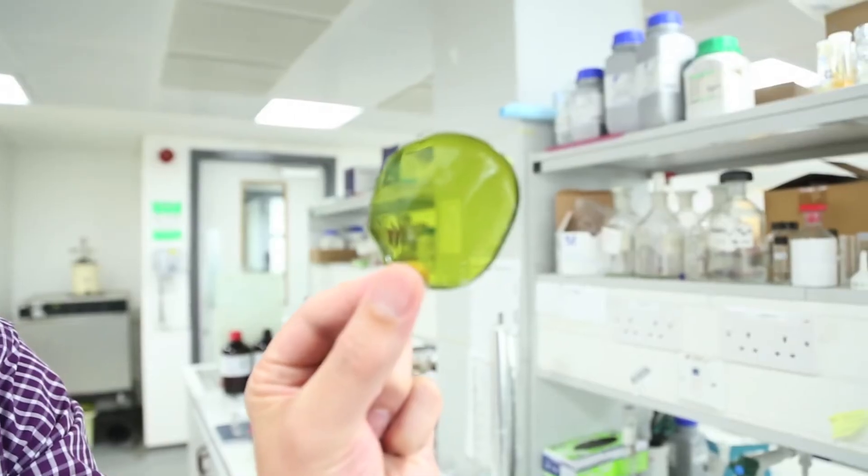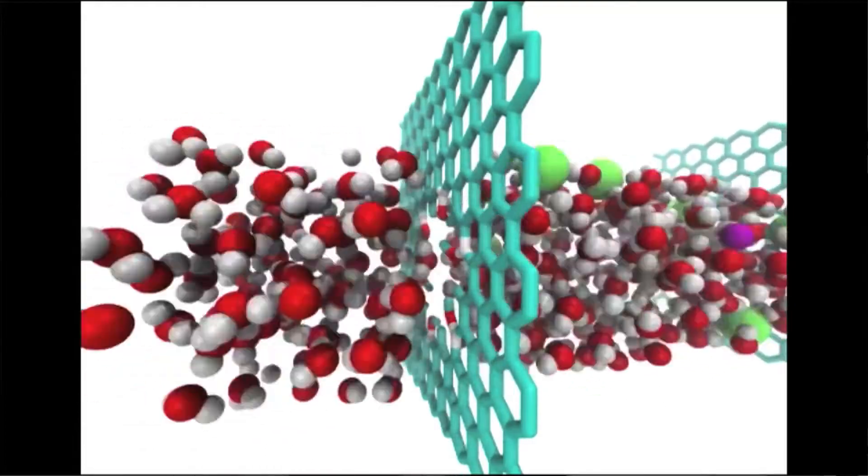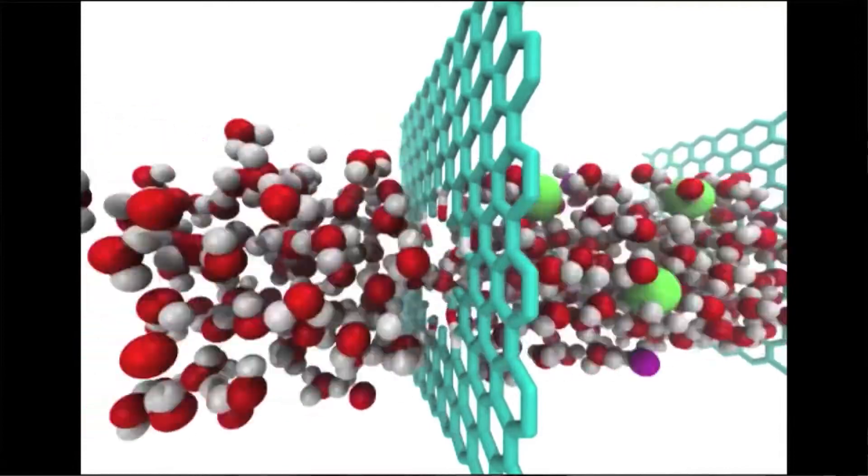Graphene oxide was shown by Rahul in the physics department here to have high permeability to water, but to be an effective barrier to all kinds of other things. One of the ideas is to use graphene as a type of nanomembrane or filter.